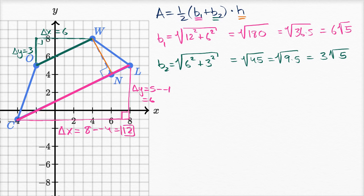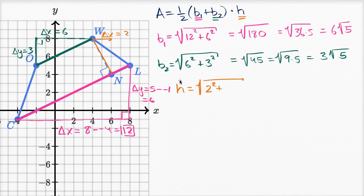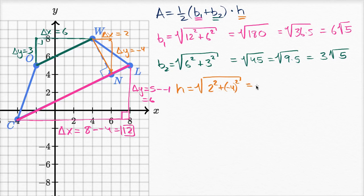We still have to figure out H, the length of the height. Going from W to N, our change in X is two — we're going from X equals four to X equals six, so six minus four is two. Our change in Y is negative four, but we square it so it becomes positive 16. So H equals the square root of two squared plus negative four squared, which is the square root of four plus 16, the square root of 20. That equals the square root of four times five, which is two square roots of five. It's nice that the square root of five keeps popping up.